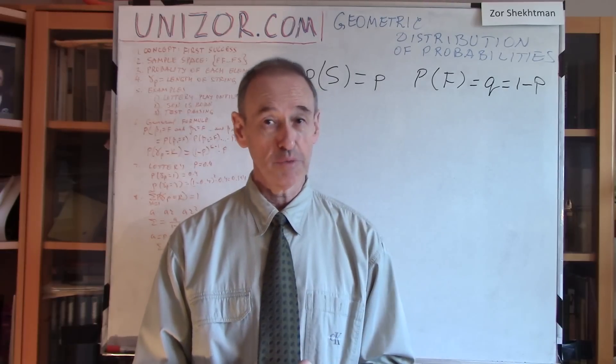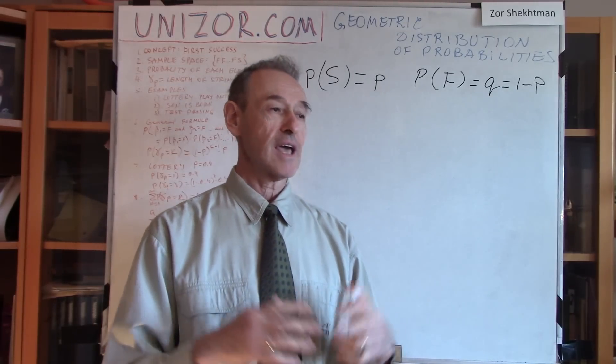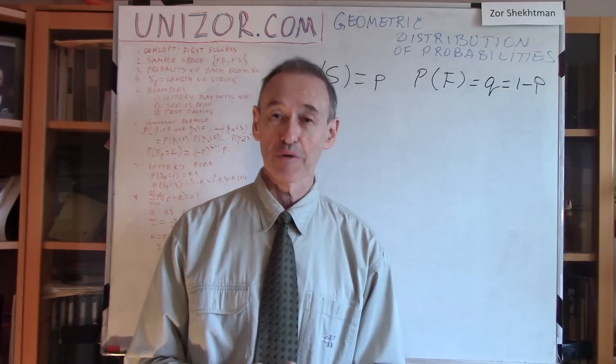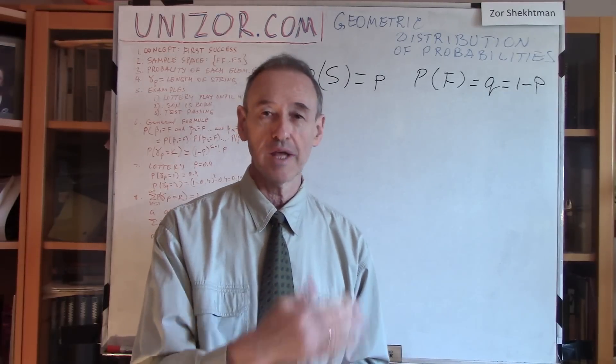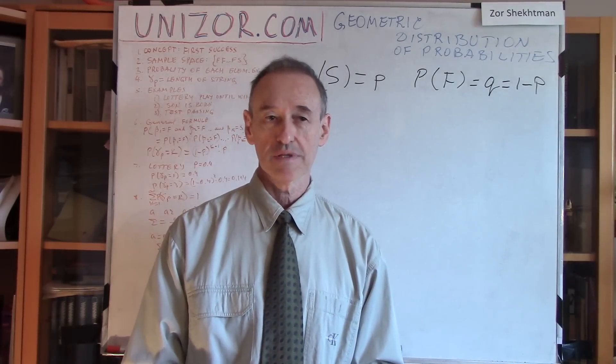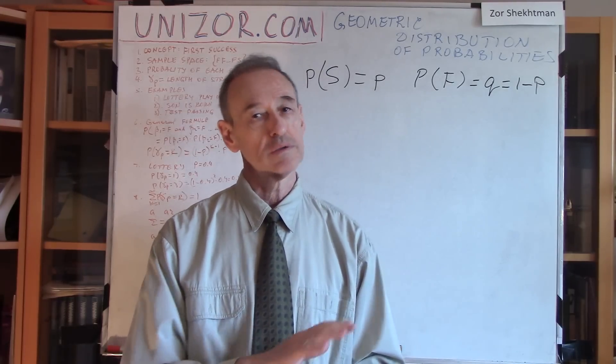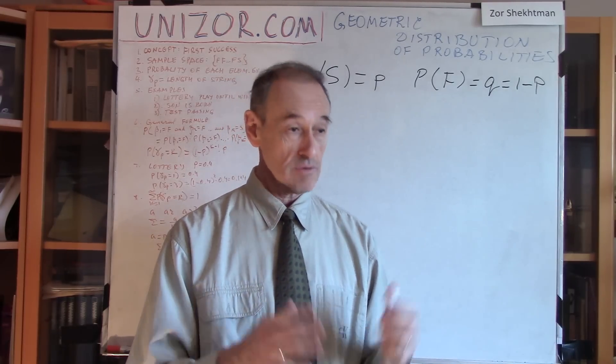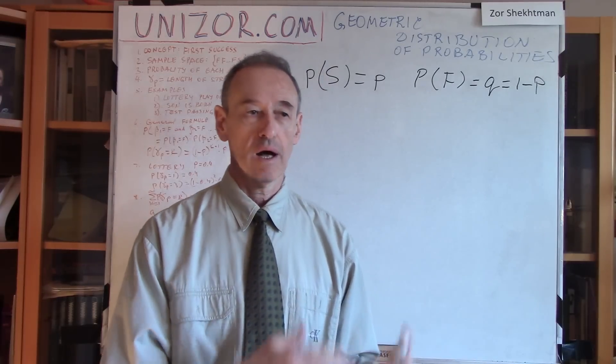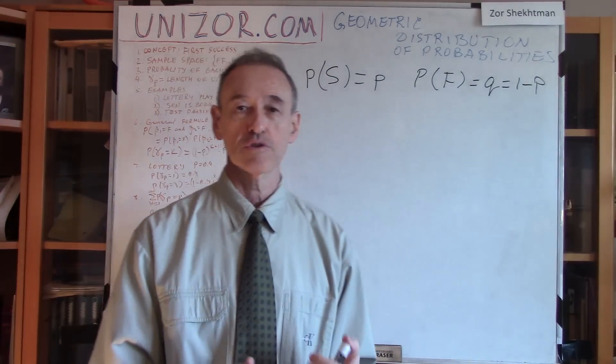But hey, you might win, right? So let's say you have made an agreement with your inner voice that you will play a certain number of times, and if you lose, you play again until you win. The first time you win, you stop. That's it. So this is a typical example of this geometric distribution.